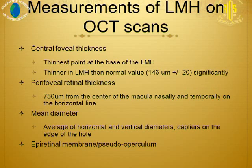With OCT, you can measure the lamellar hole using calipers in the software. You can measure the central foveal thickness at the thinnest point at the base of the lamellar hole. The perifoveal retinal thickness is measured nasally and temporally from the center of the macula on the horizontal line, and the mean diameter is measured horizontally and vertically with calipers placed on the edge of the hole. An epiretinal membrane or pseudo-operculum can also be identified. These measurements allow unified study of lamellar hole progression.